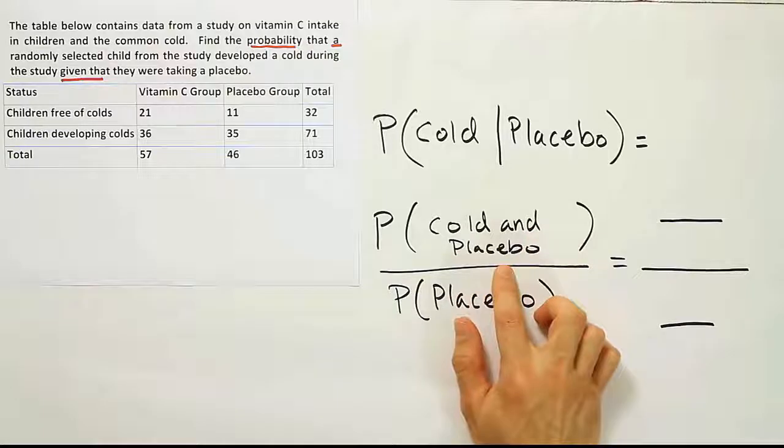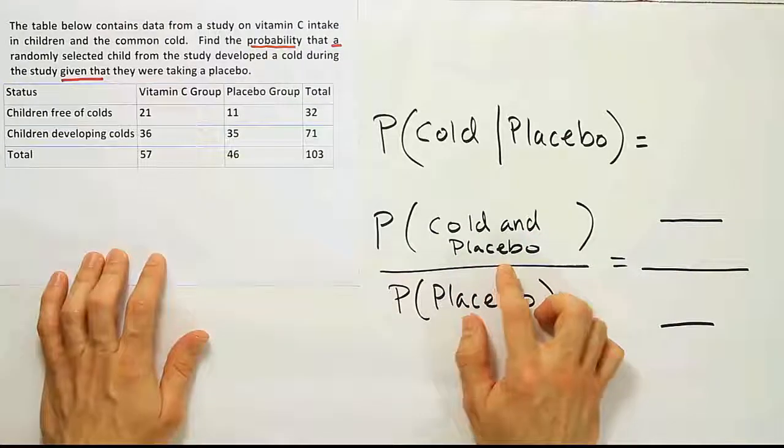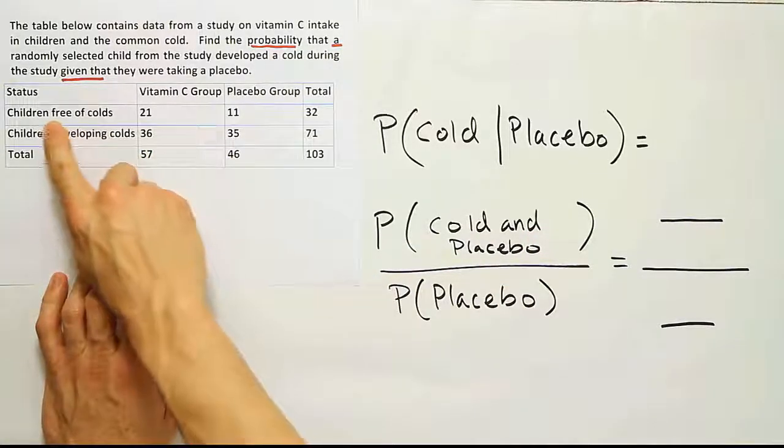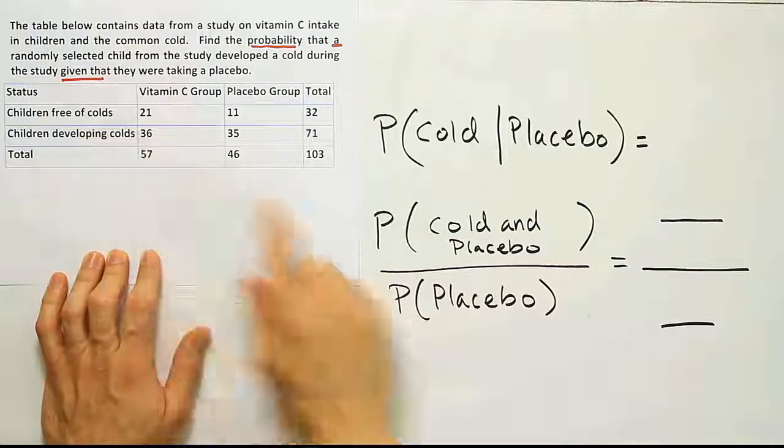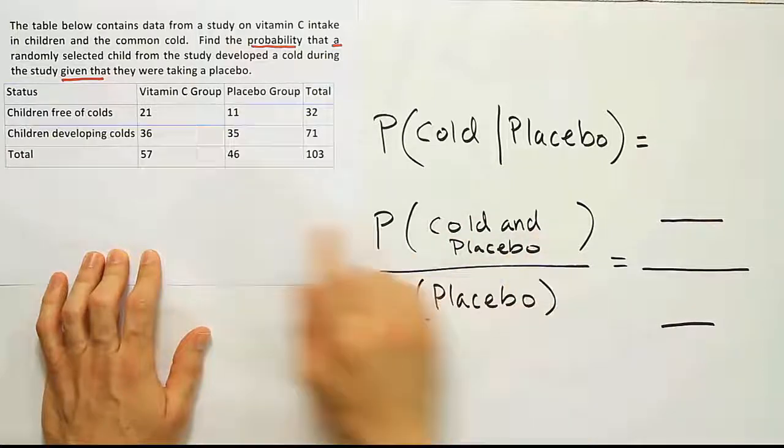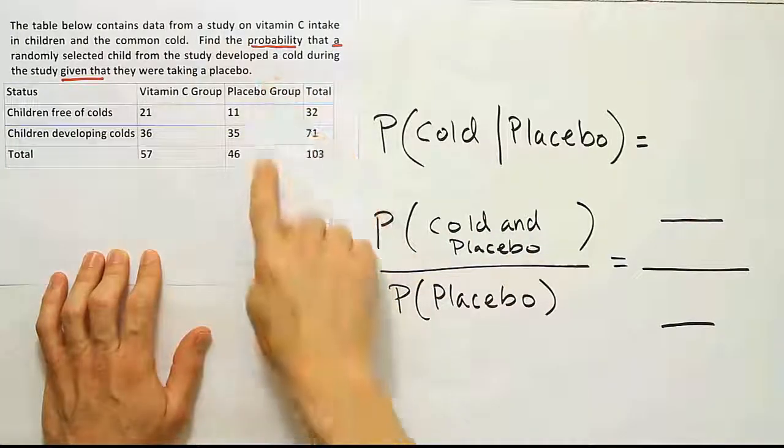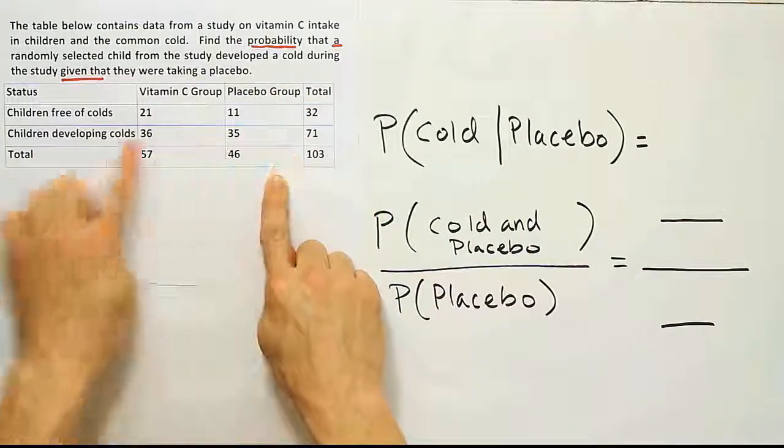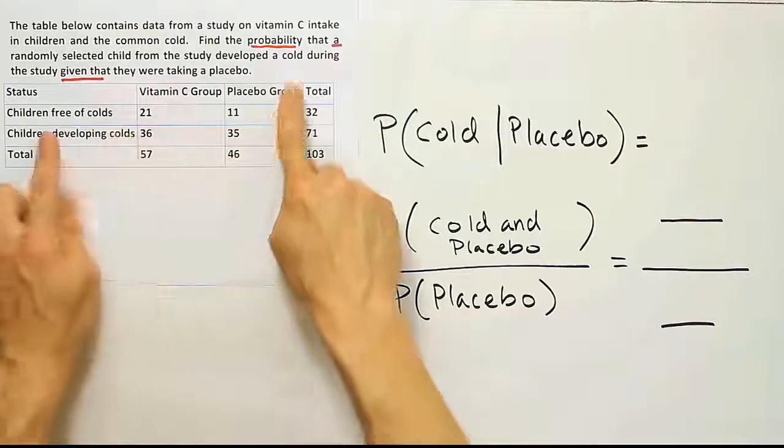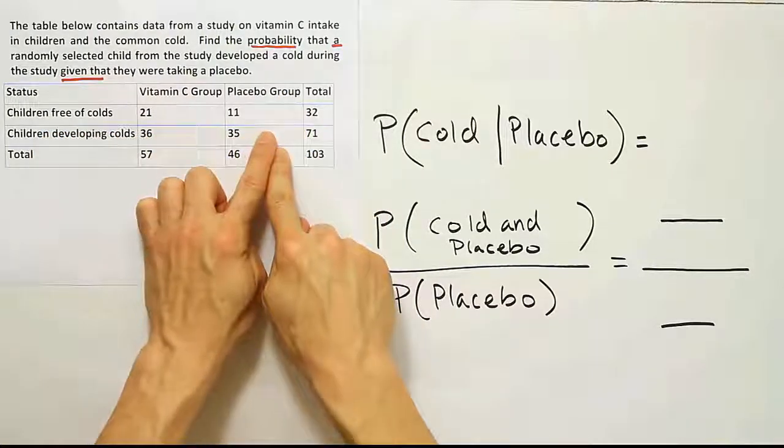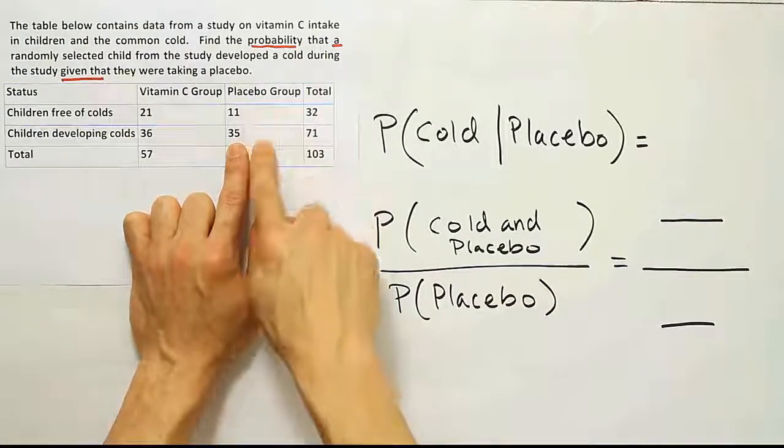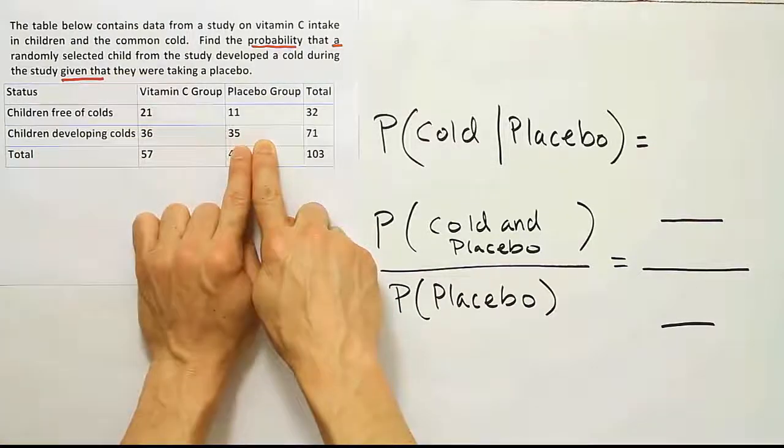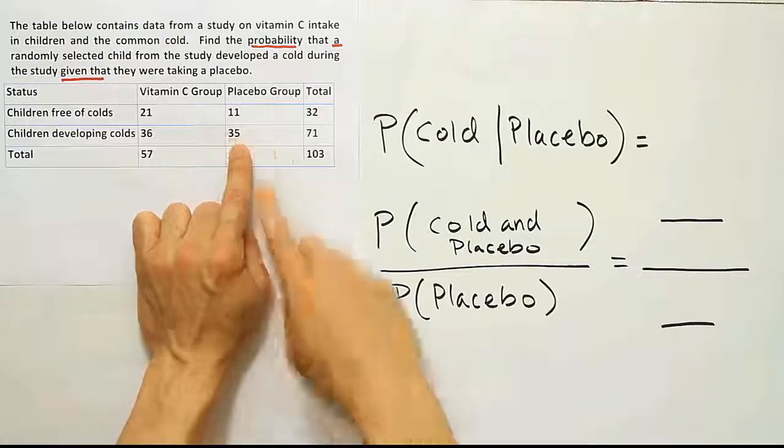Cold and placebo. So if you want to look at that, you're going to say, children develop cold, children free of colds. Developed colds is the same as a child having a cold. And then it says, and placebo, that's the intersection with the placebo group. The placebo group is here. Children developing colds is here. They intersect here, right? These two categories intersect here. So the answer is 35. 35 children in a study are part of the placebo group and the children who developed colds group. That's the intersection.